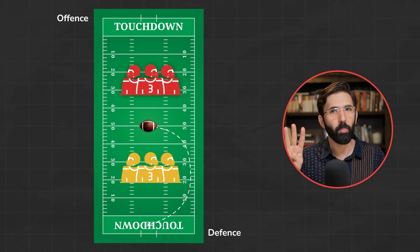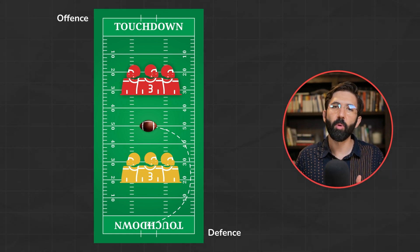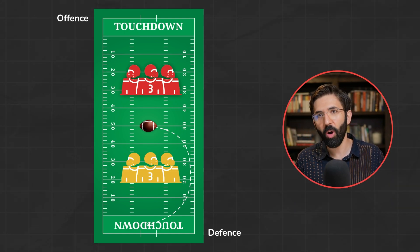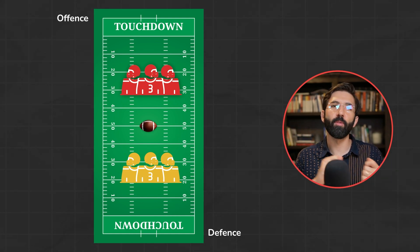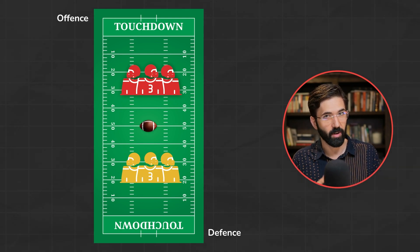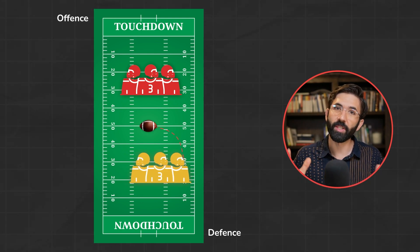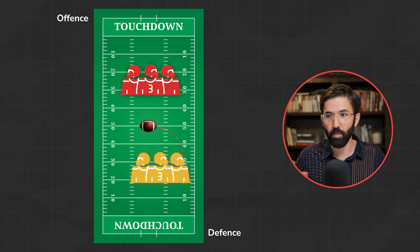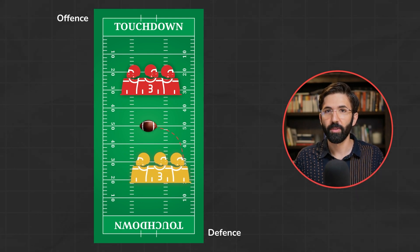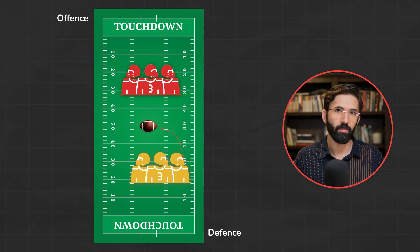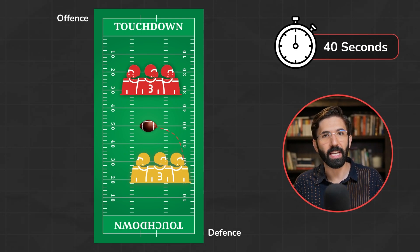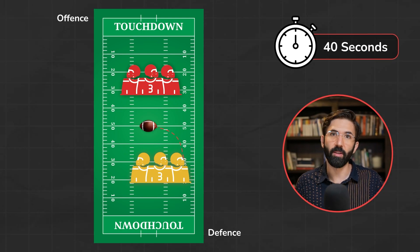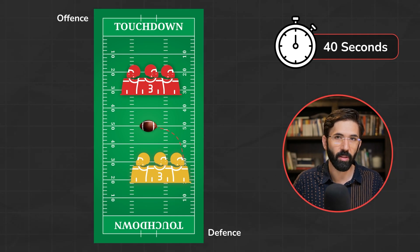The offense has four attempts or plays to move the ball at least 10 yards down the field, or else they have to turn the ball over to the defense. The defense wants to stop the offense from moving the ball down the field so that they have a chance to win some points. But there's only 40 seconds in between each play.